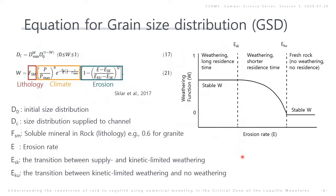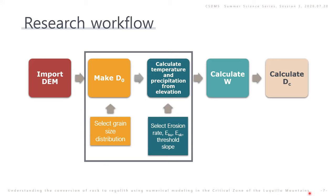The right figure shows the relationship between weathering and erosion rate. Simply stated, a higher erosion rate causes less weathering and less residence time. In addition, we consider two erosion thresholds. ESK is an abbreviation for the transition between supply-limited and kinematically limited regimes. If the erosion rate is larger than ESK, the grain starts to move. When the erosion rate is larger than ESK, the grain doesn't undergo any weathering process or residence time, which means it remains fresh.